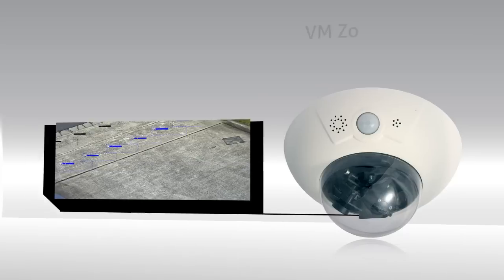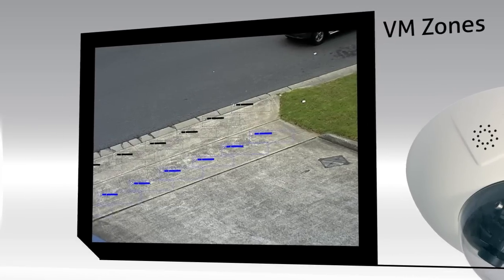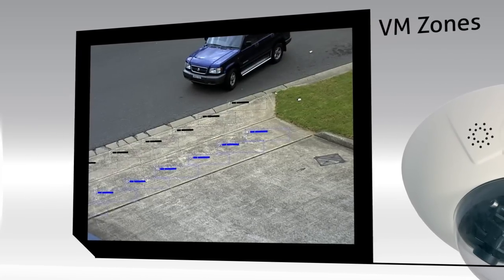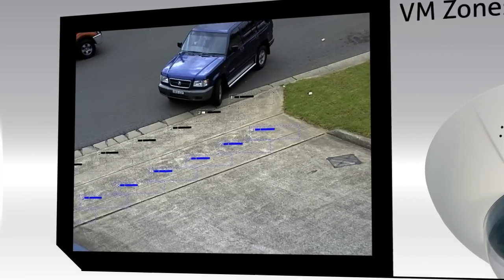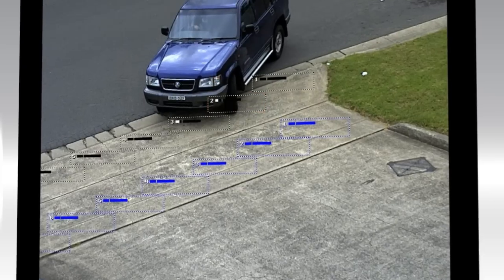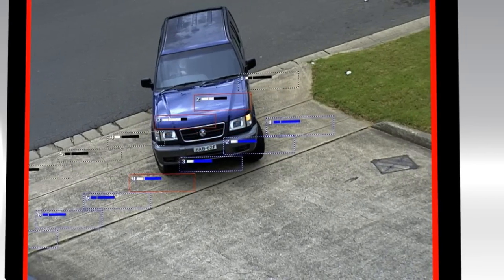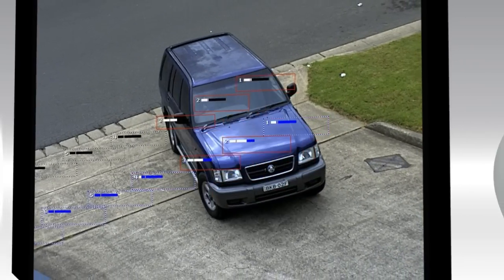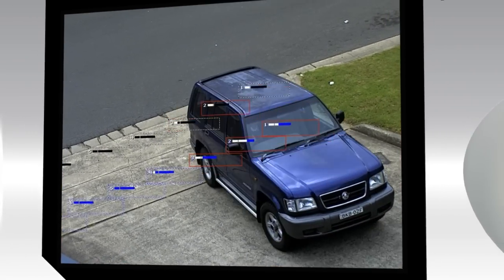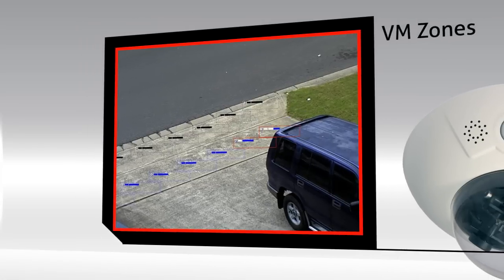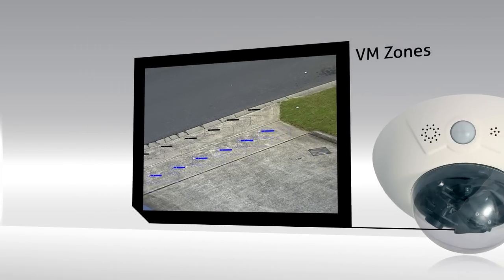Video motion zones can be set up to detect movement in strategic areas of the camera scene. They can be used to eliminate false alarms from non-static objects like trees, or monitor specific areas like entries, exits and perimeters.